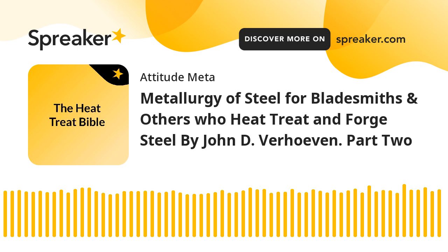High carbon steels — hypereutectoid steels. As the percent C dissolved in austenite increases, the iron atoms are pushed further apart. This stretches the chemical bonds that hold the Fe atoms together, generating a form of energy called strain energy. There is a limit to how much strain energy the austenite can stand; the amount of C dissolved in austenite when this limit is reached is called the solubility limit. Question: the solubility limit in austenite at 820°C (1508°F) is 1 wt% C.